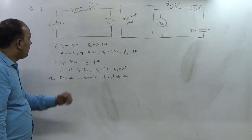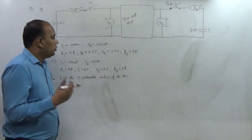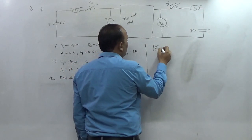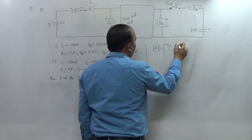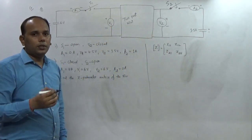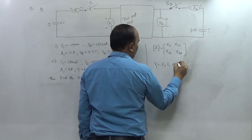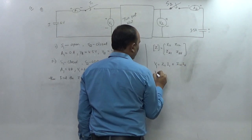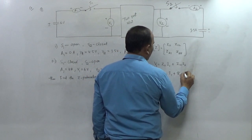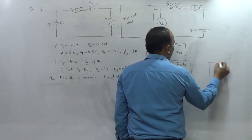We need to find the Z-parameter matrix of the network. The Z matrix is: Z = [Z11, Z12; Z21, Z22]. In voltage-current form: V1 = Z11·I1 + Z12·I2, and V2 = Z21·I1 + Z22·I2. These equations represent the two-port network.